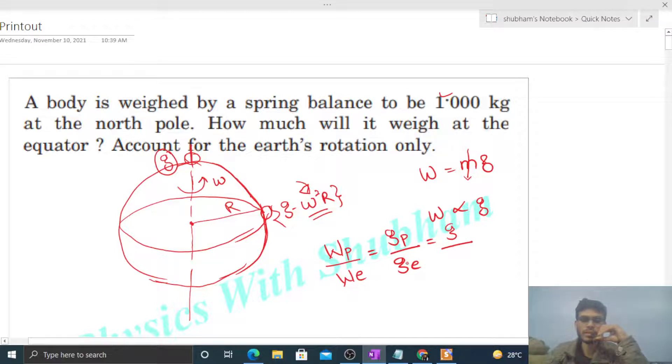g at poles, if we take it as g, then g at equator will be g minus omega square into capital R. So from here we have to find out the weight at equator. That is, weight at equator equals weight at pole times (g minus omega squared R) divided by g, which is nothing but Wp times (1 minus omega squared R divided by g).